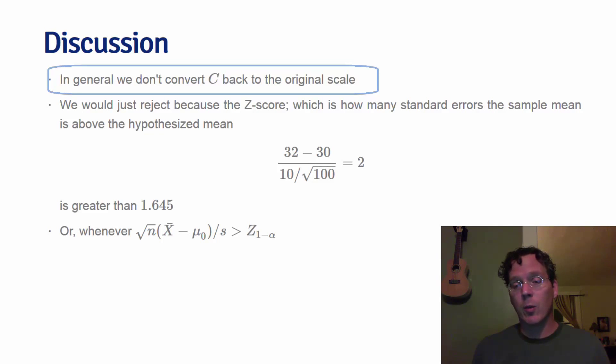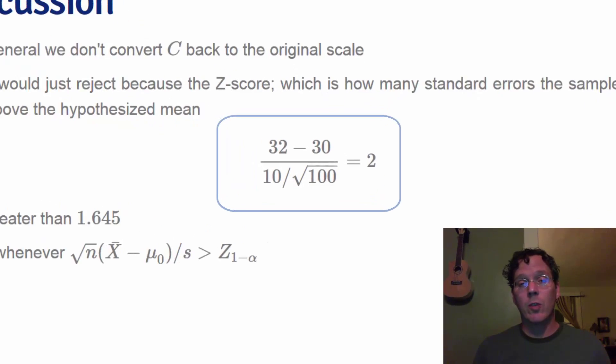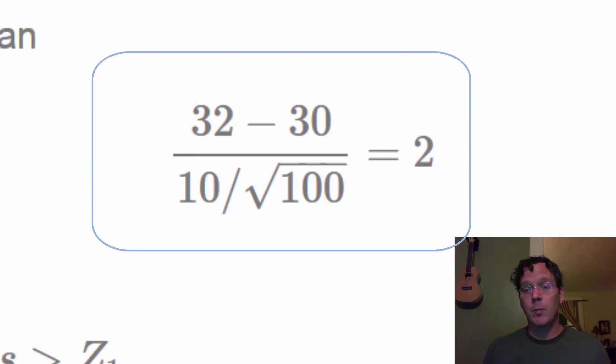So instead of calculating this constant back on the units of the original data, we tend to convert our sample mean into however many standard errors from the hypothesized mean it is. So take this specific example. If our observed sample mean was 32, our hypothesized mean is 30.